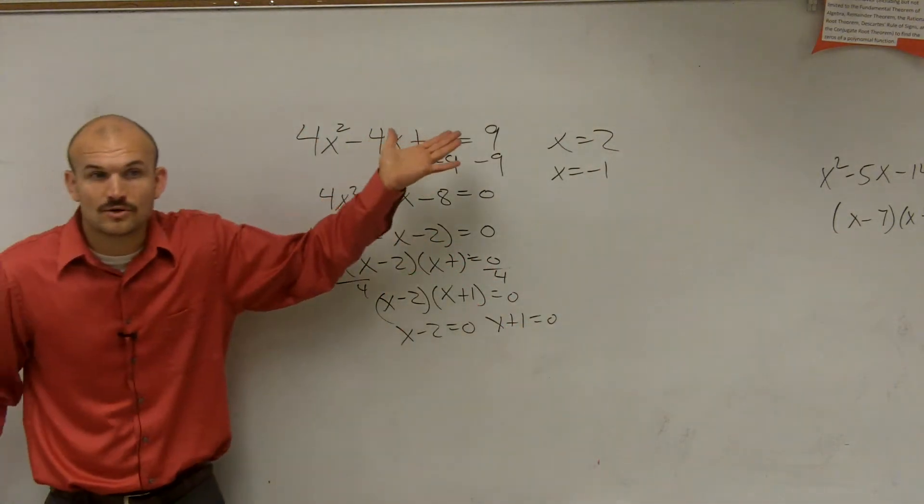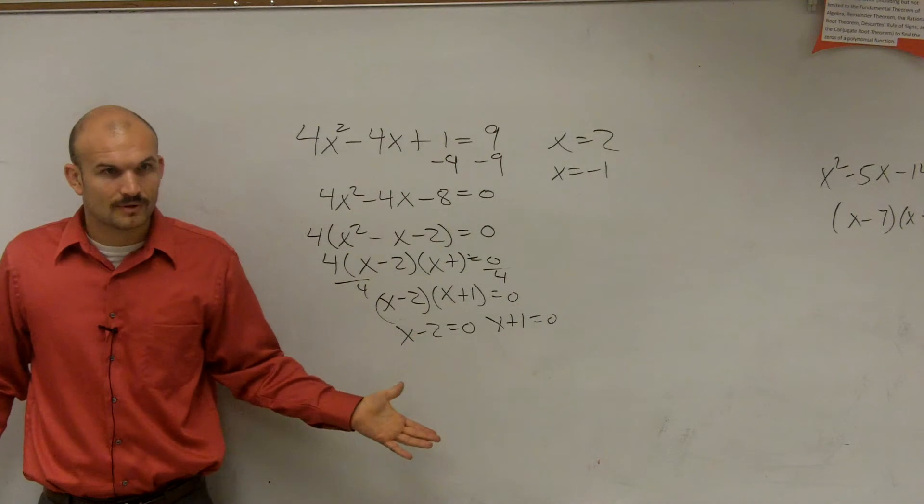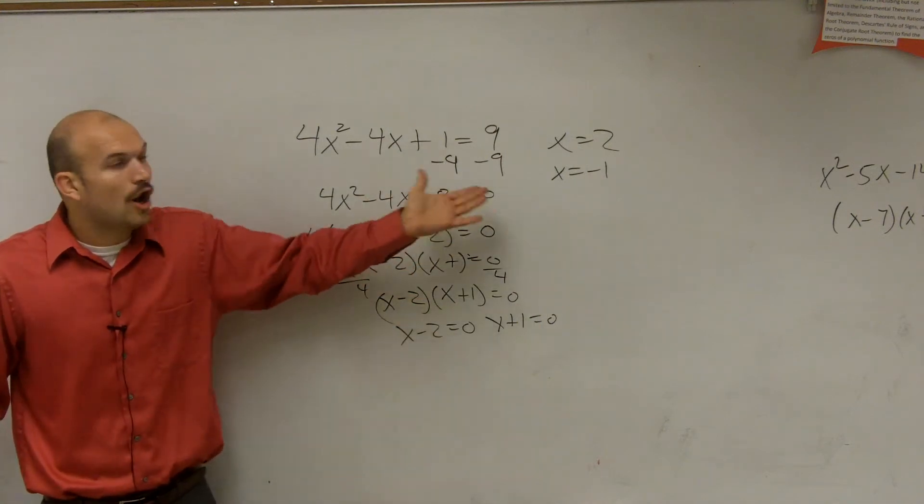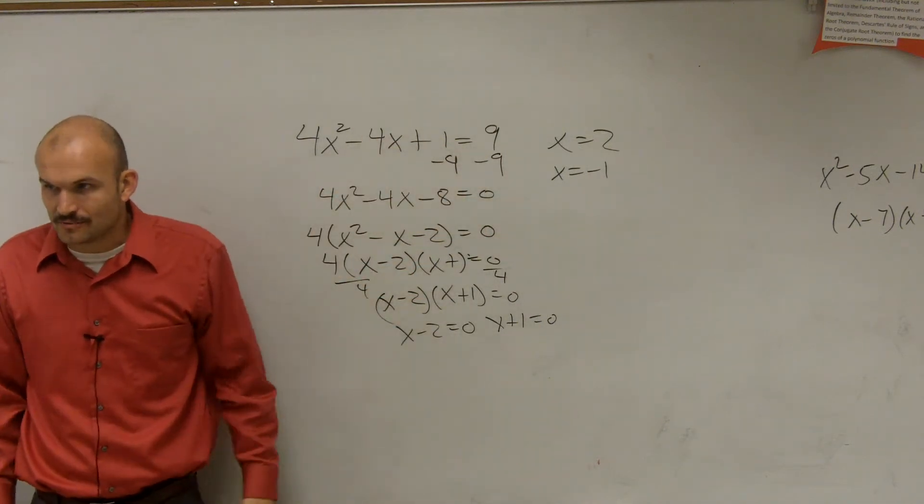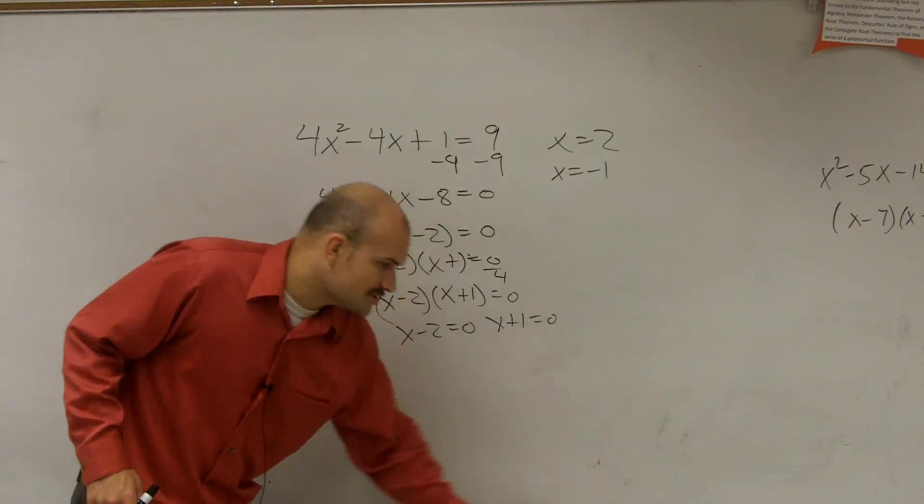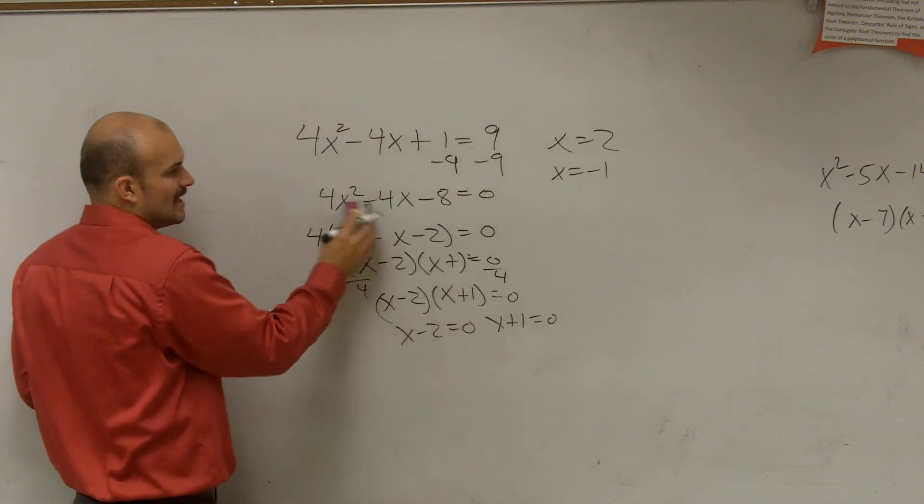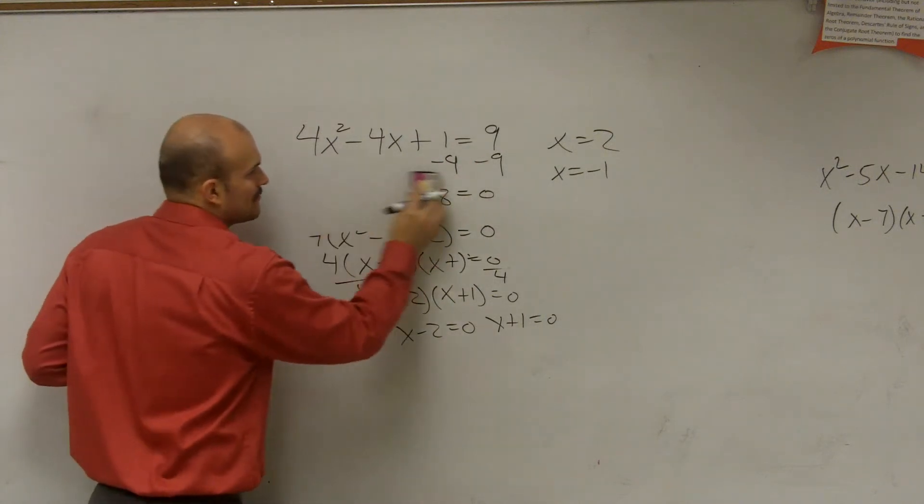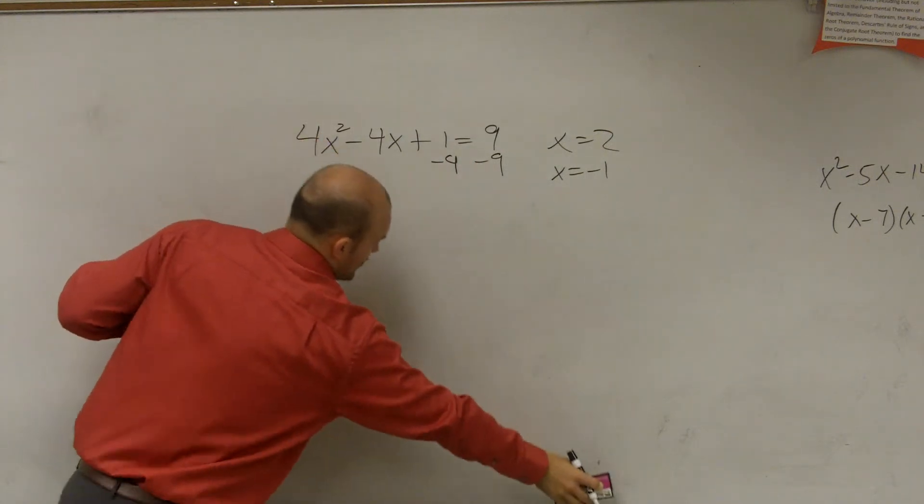Now, I did that really quickly because we've already gone through how to do all that, right? And not always is that going to be factorable. So what happens if it's not factorable? So let's pretend that when you subtract 8 that you don't have a factorable equation. The next thing you guys want to look at